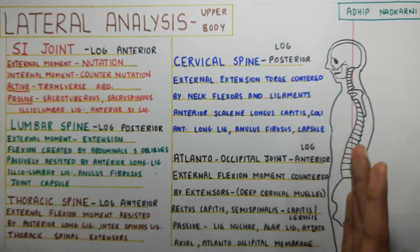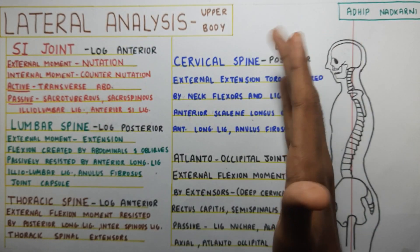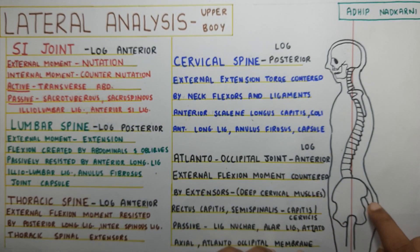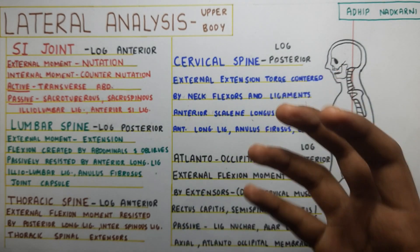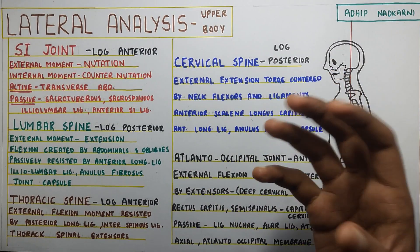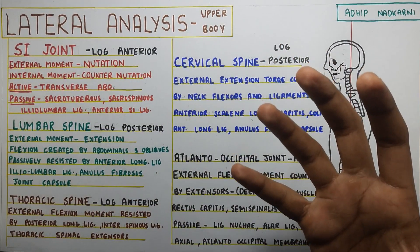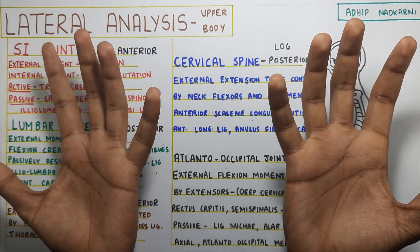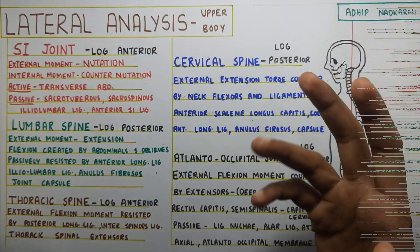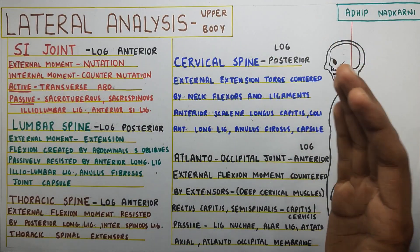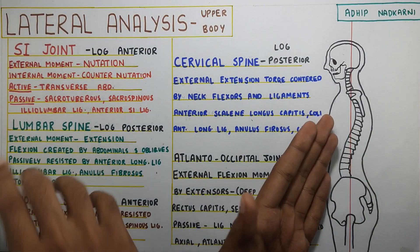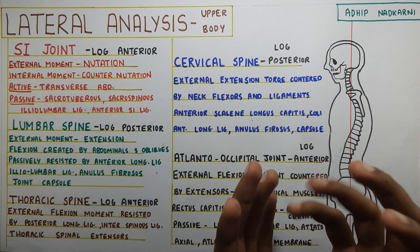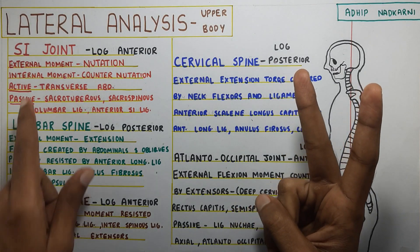At the SI joint, the external moment — because the line of gravity is anterior — is nutation. What is nutation? It is the gap between the sacrum and the pelvis which increases during nutation. If you want to exactly know how the movement occurs, you can check out my video on SI joint biomechanics. You'll get to know about the kinematics and kinetics both. Then going to the internal moment — gravity is putting the SI joint into nutation, and the internal moment creates a counter-nutation to get the balance back. This is done by two things: active and passive.